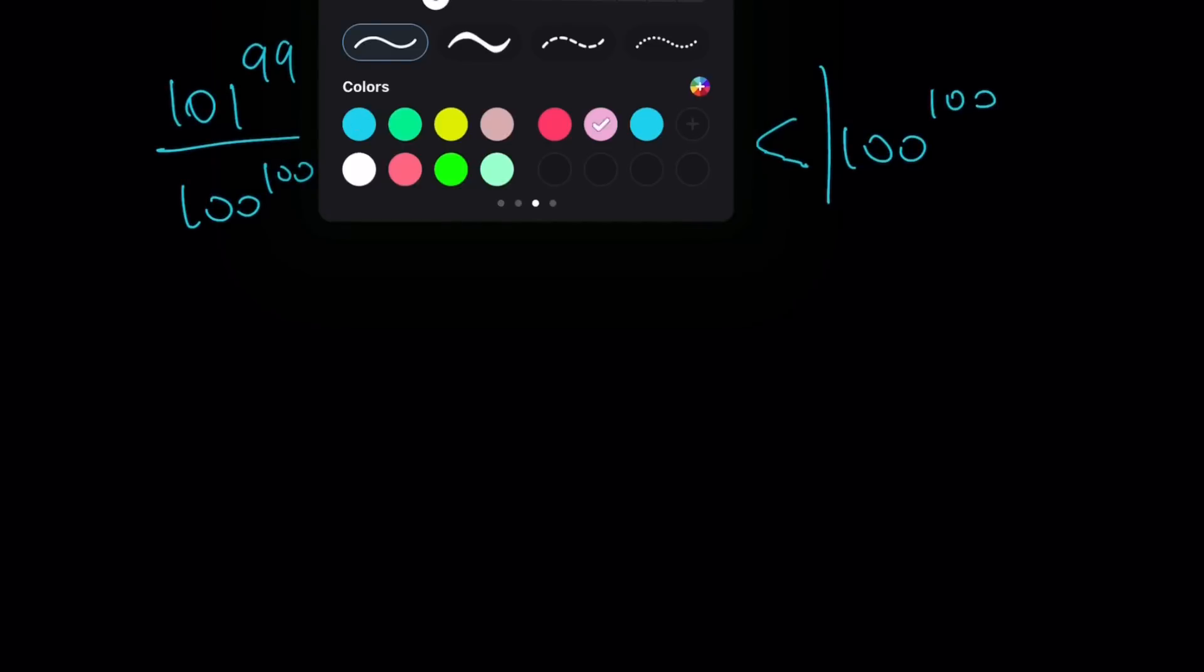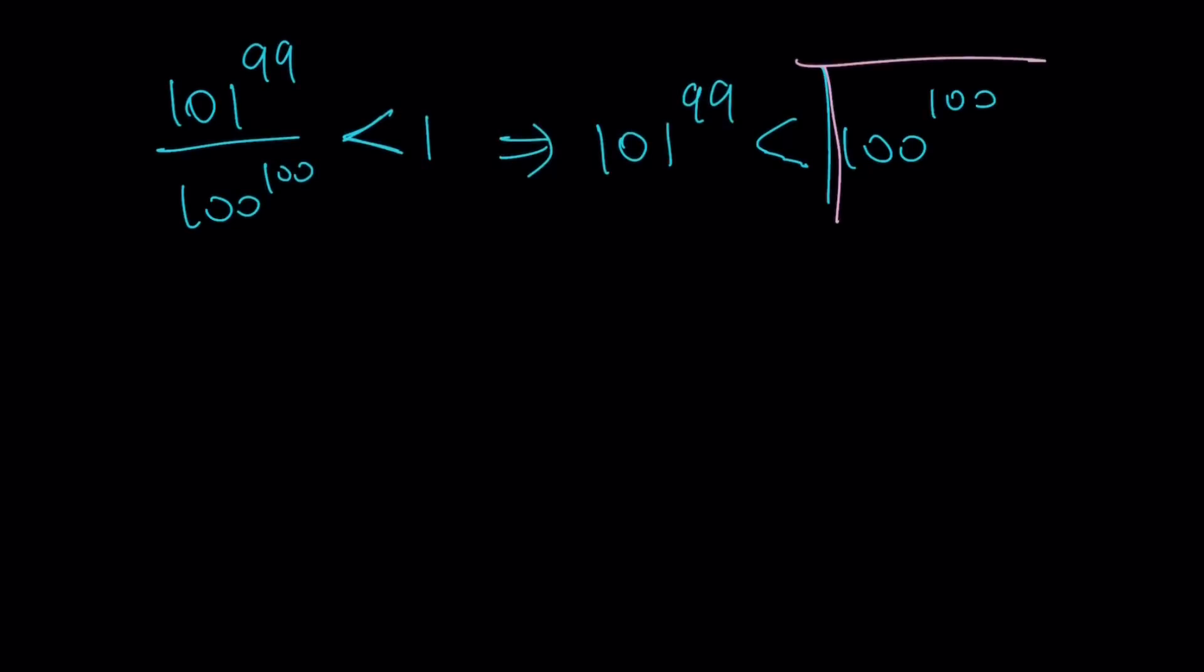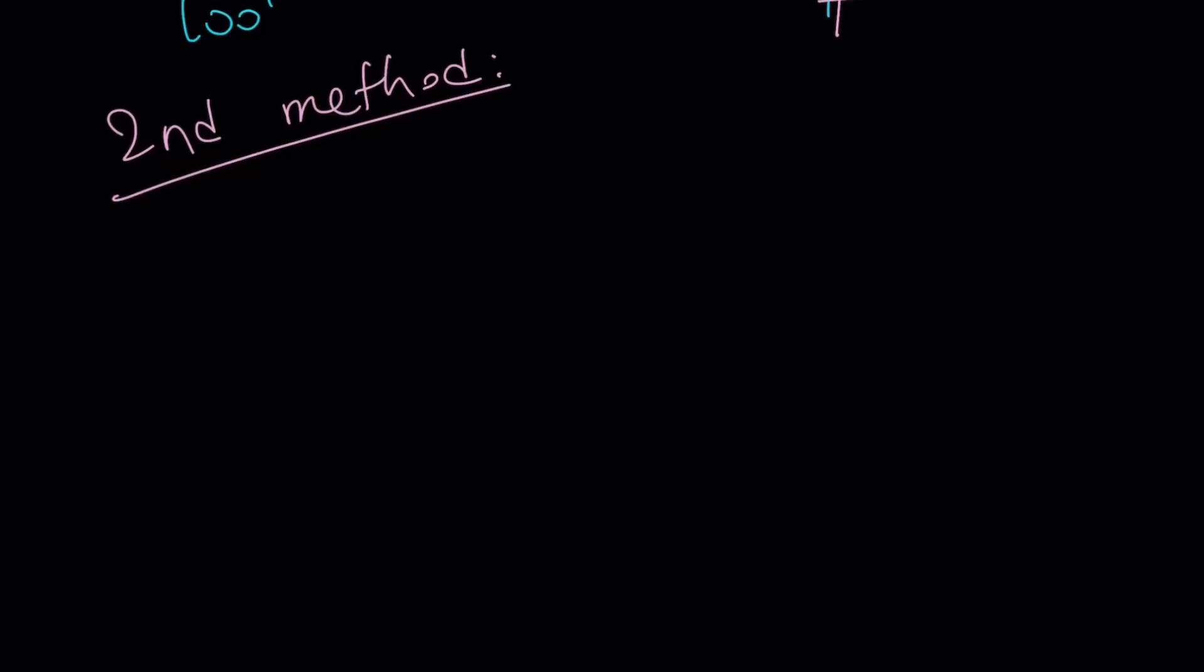In other words, our larger number is this one: 100 to the power of 100. This is going to be our larger number. Make sense? I hope it does. Let's go ahead and talk about the second method, because the second method is going to be even better.